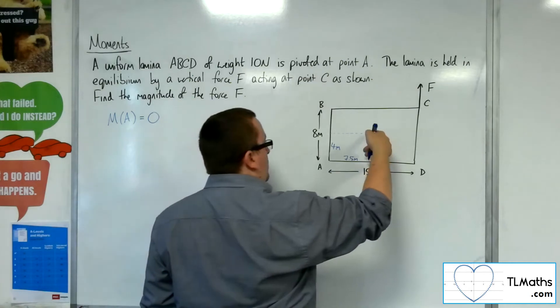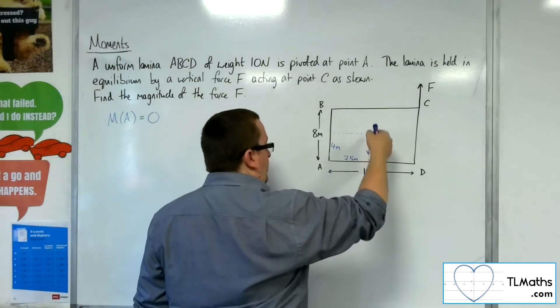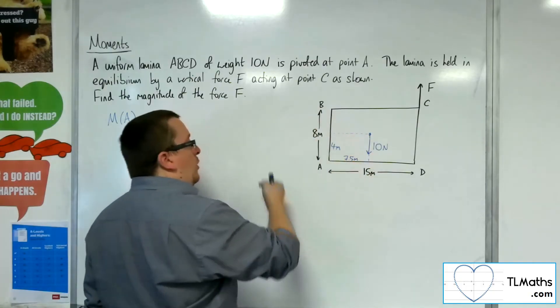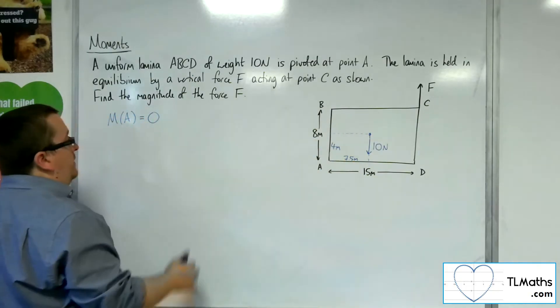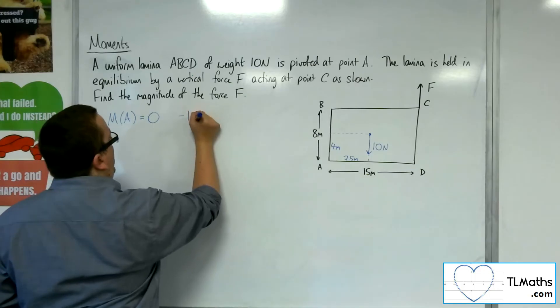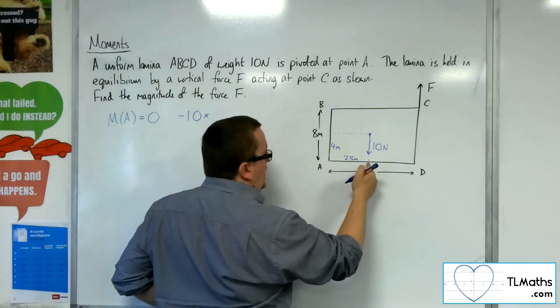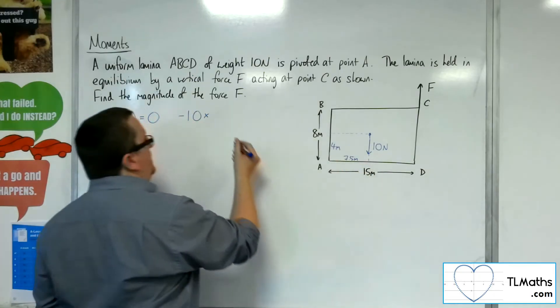Then I've got this working downwards, so that will be going around in that direction, in a clockwise motion, and so will be negative. So we've got minus 10 times the distance from A to the force, which is 7.5 meters.